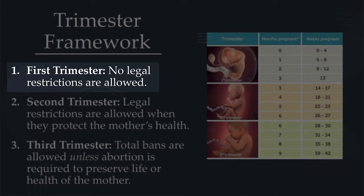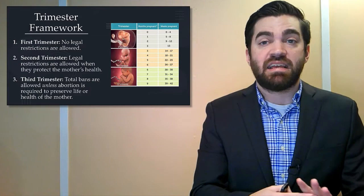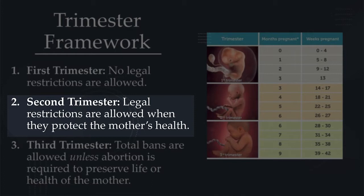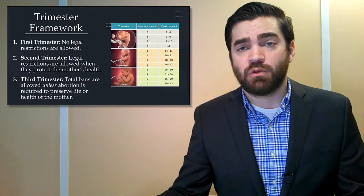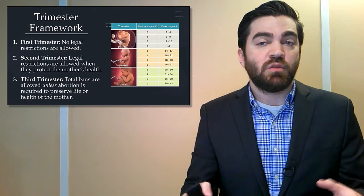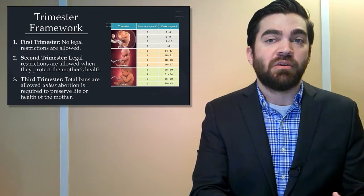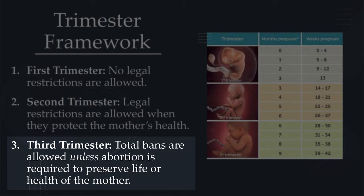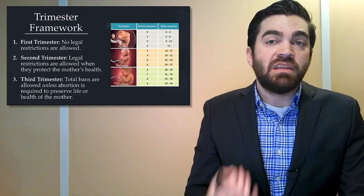To summarize: during the first trimester the state can't restrict access to abortion at all — it's between a woman and her doctor. In the second trimester the state can restrict access only if those restrictions actually protect the mother's health, such as requiring clinics be safe, clean, have hospital-grade equipment, or that practitioners have admitting privileges. Then during the third trimester the state can make abortion illegal unless an abortion is required to protect a mother's life or health.